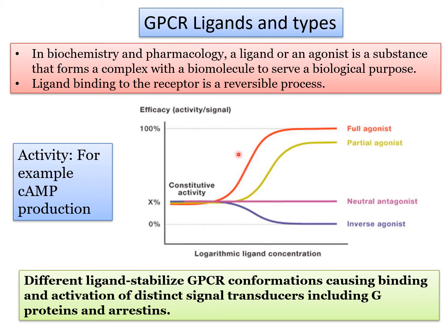A full agonist is defined as a ligand that elicits maximum signal response at the interrogated pathway — for example, acetylcholine as a full agonist produces maximum cyclic AMP. A partial agonist elicits activity below maximum level. A neutral antagonist is a ligand that binds to the receptor but does not affect constitutive receptor activity — so while an agonist increases cyclic AMP production, a neutral antagonist neither increases nor decreases constitutive activity.